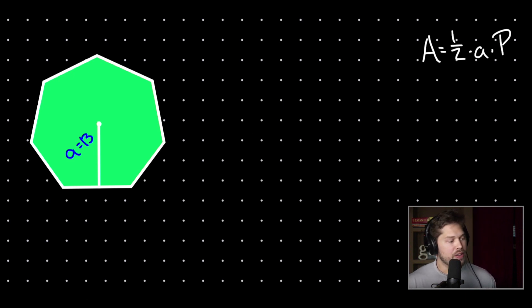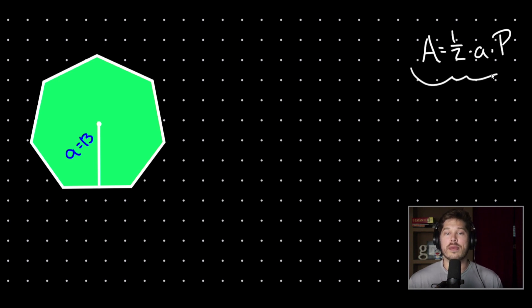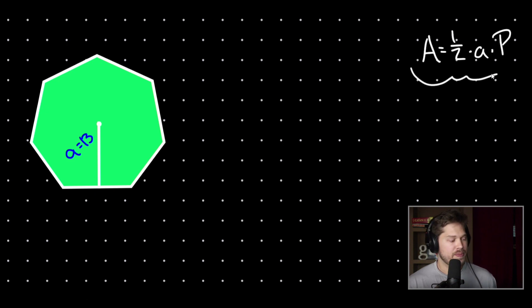In your math class, you've probably seen the formula: area equals one-half times the apothem times the perimeter. So we need to find the perimeter of our shape before we can use this formula.